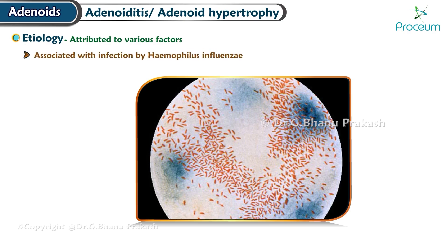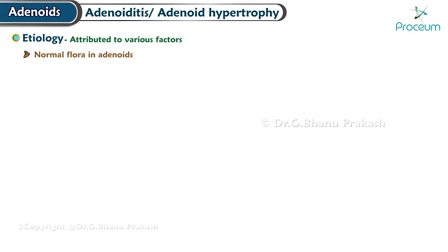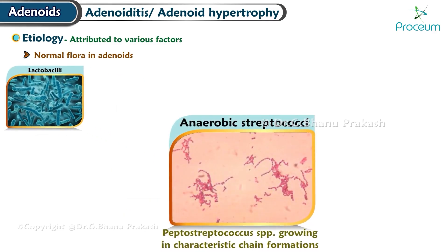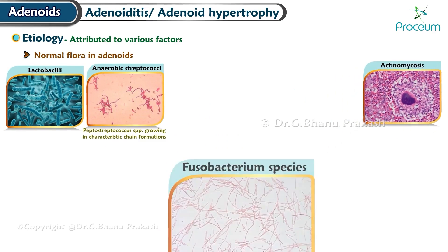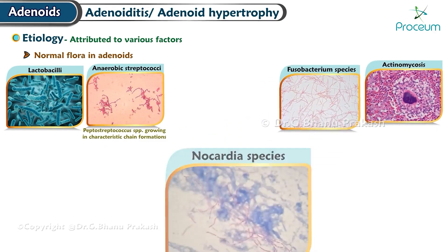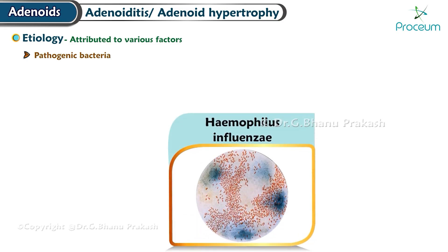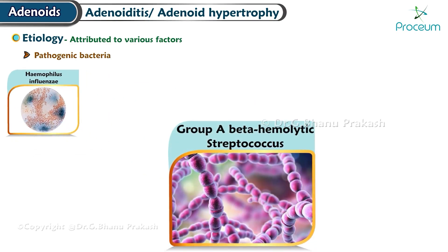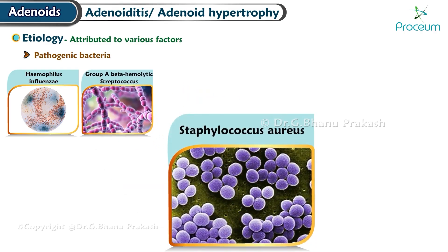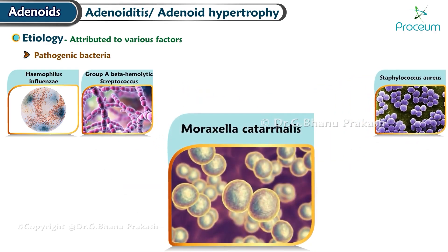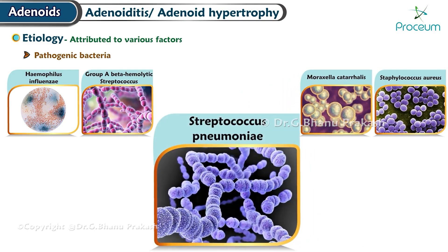Hyperplasia of adenoids has been associated with infection by Haemophilus influenzae, among other organisms. Normal flora of the adenoids includes various bacteria such as lactobacilli, anaerobic streptococci, actinomycosis, Fusobacterium species, and Nocardia species. Pathogenic bacteria commonly found in adenoiditis include Haemophilus influenzae, Group A beta-hemolytic Streptococcus, Staphylococcus aureus, Moraxella catarrhalis, and Streptococcus pneumoniae.